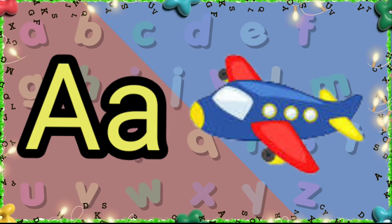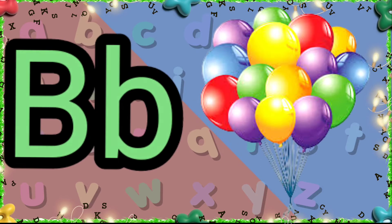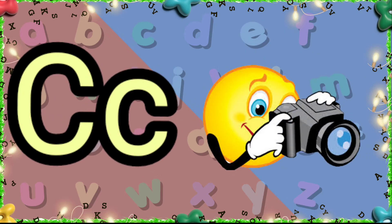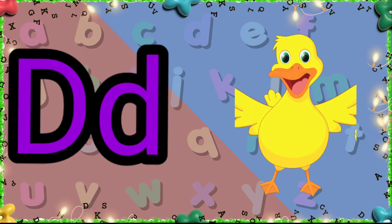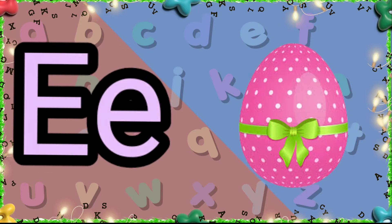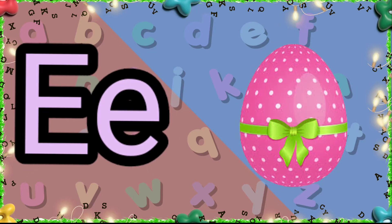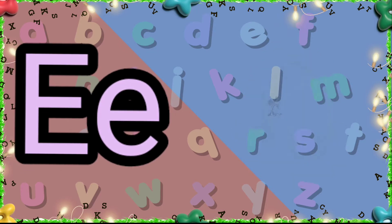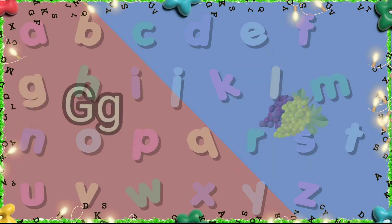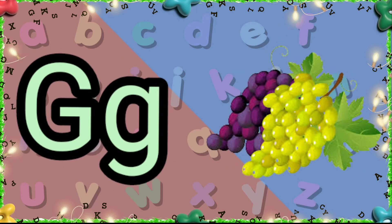A is for aeroplane. B is for balloons. C is for camera. B is for duck. E is for egg. F is for fan. G is for grapes.